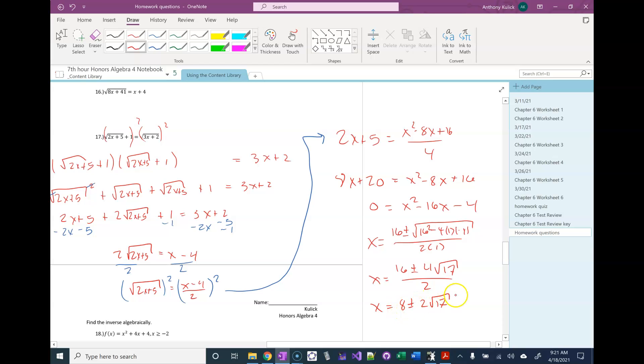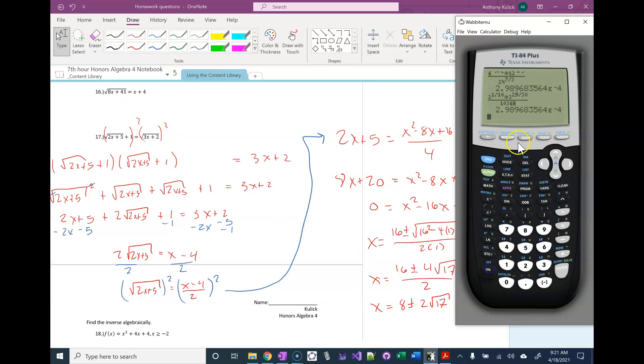So I have to plug in 8 plus 2 times the square root of 17 in for x to both sides. And the same thing with the minus. I'm just going to do that on my calculator here and actually show that for you guys.